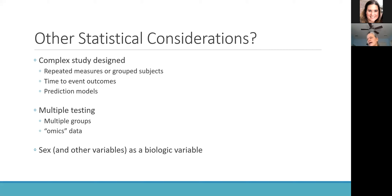There are also potentially more complex aspects to your study design. For example, a lot of experiments will include multiple measurements per subject, which from a statistics standpoint needs to be taken into consideration. We can also think about studies with slightly more complex outcomes such as time to events — in a time to event trial in cancer, there are special considerations like how many people are likely to have the event, when they're likely to have the event, and enrollment rates. We also need to carefully consider the idea of multiple testing, which is very important in animal and cell line studies, especially when getting into omics data with lots of outcomes.